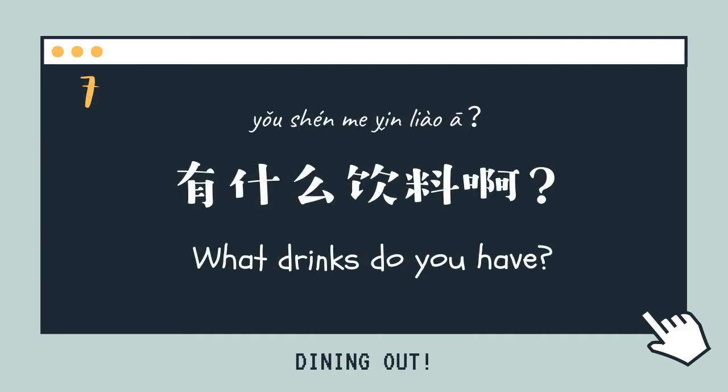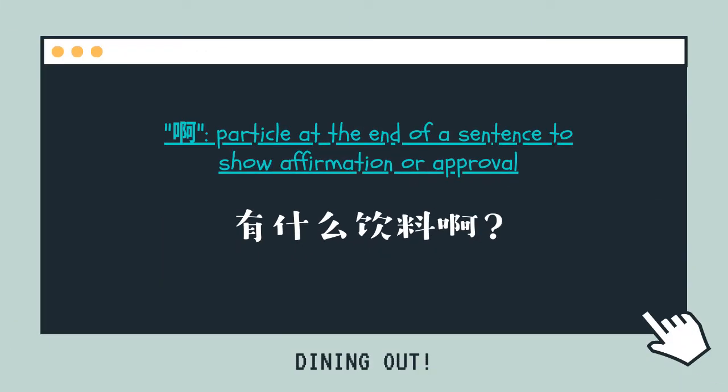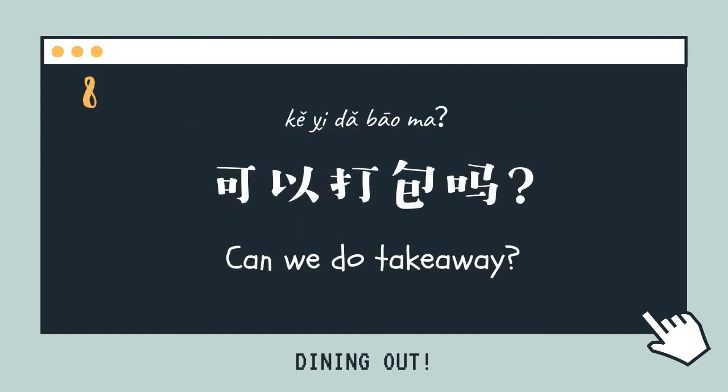你們有什麼飲料啊? — What drinks do you have? 啊 is a particle used at the end of a sentence to show affirmation or approval. 可以打包嗎? — Can we do takeaway?